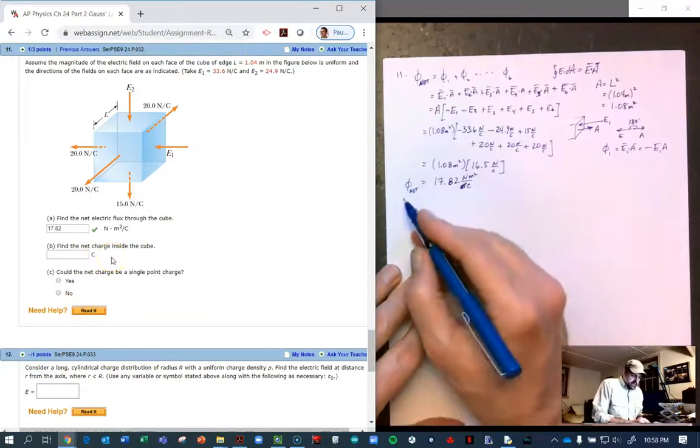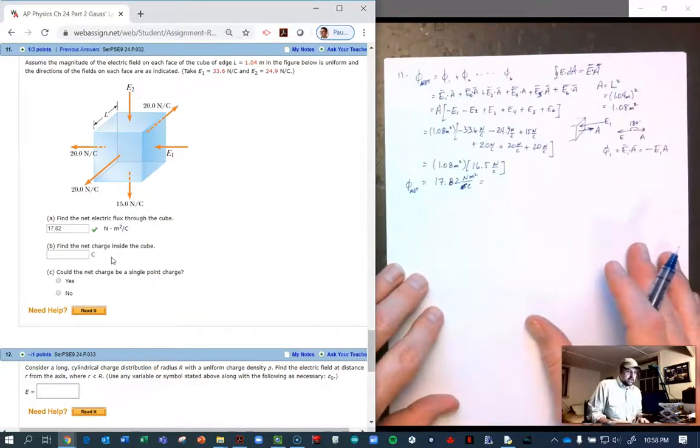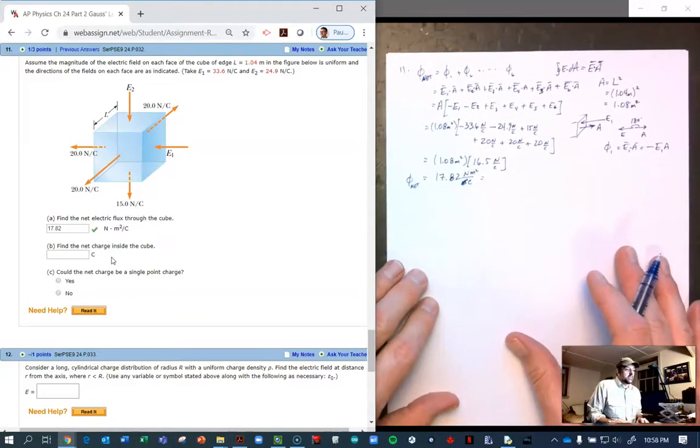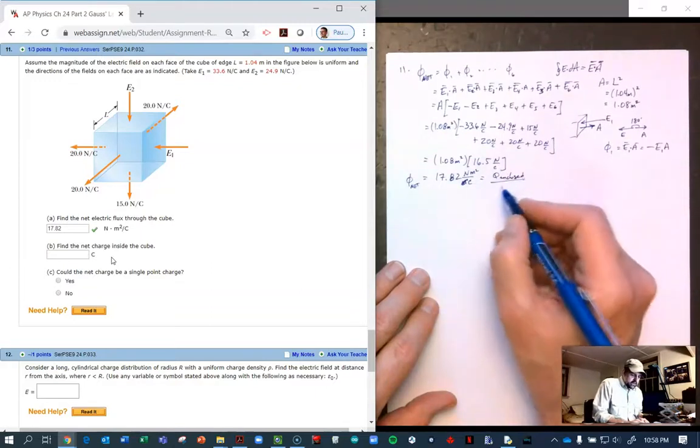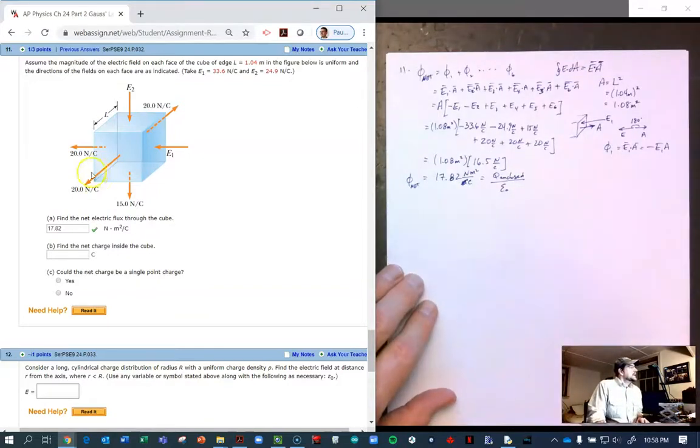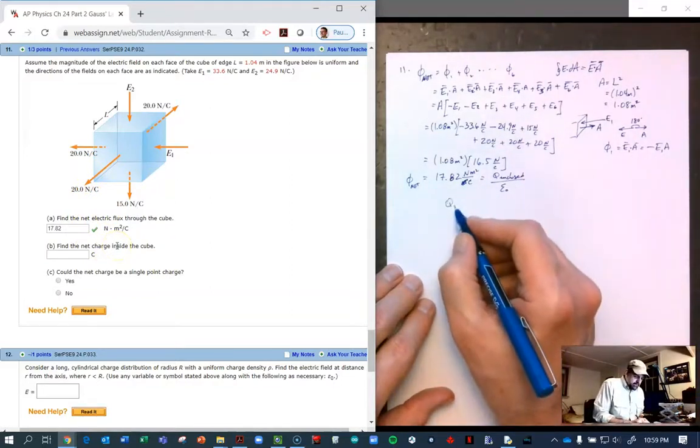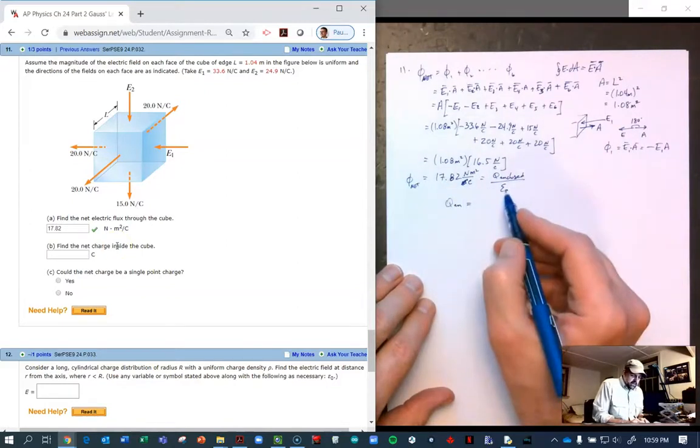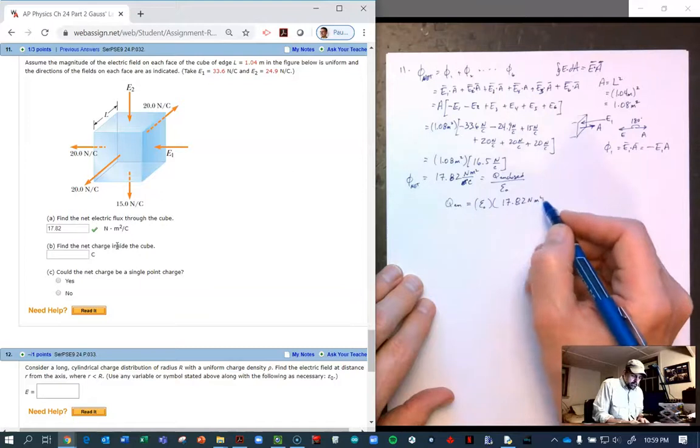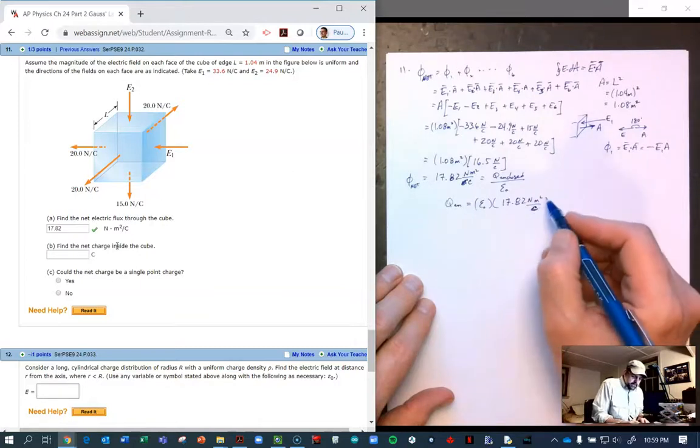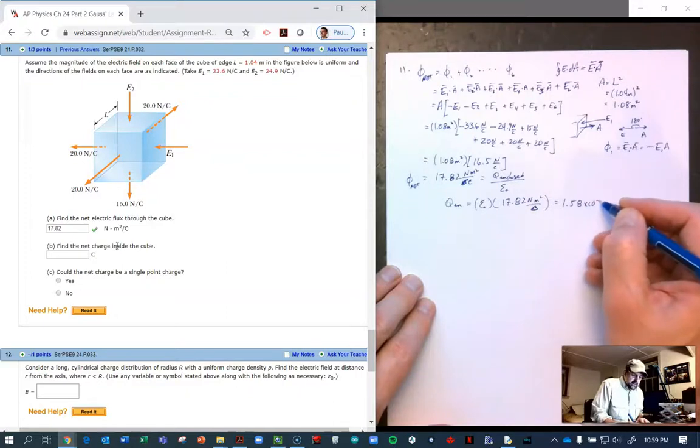Now to find the net charge on the inside, remember the net flux is equal to E·dA. But as we found out in the previous problems, we also know that the flux is Q enclosed over epsilon naught. And so the charge enclosed, the net charge inside the cube, is this Q enclosed. To find that, it's just equal to the net flux times epsilon naught. And when you do it out, it's 1.58 times 10 to the minus 10 coulombs.